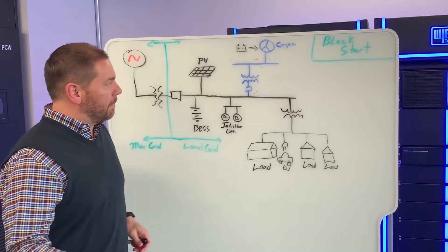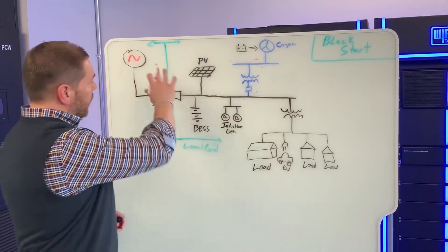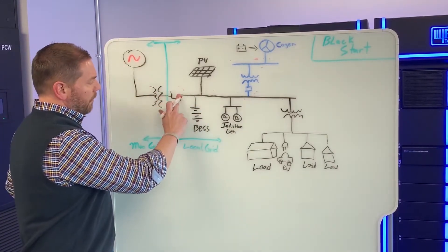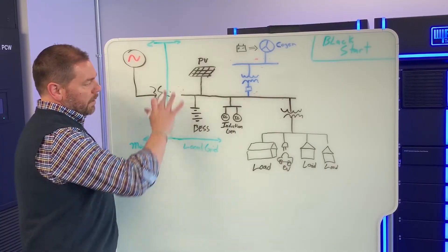So, real quick, in this example, the main grid has gone down. We've opened up this breaker and the system is black.